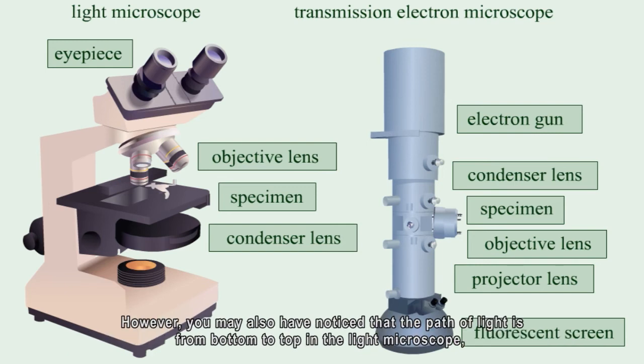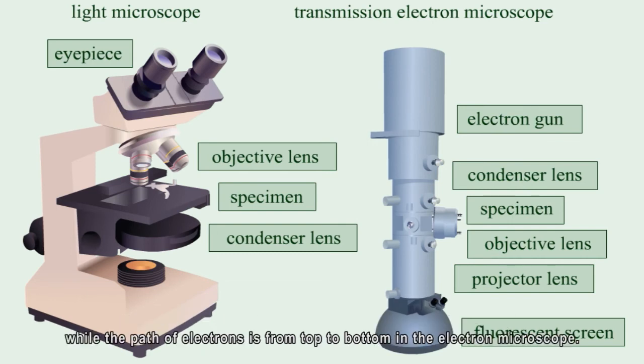However, you may also have noticed that the path of light is from bottom to top in the light microscope, while the path of electrons is from top to bottom in the electron microscope.